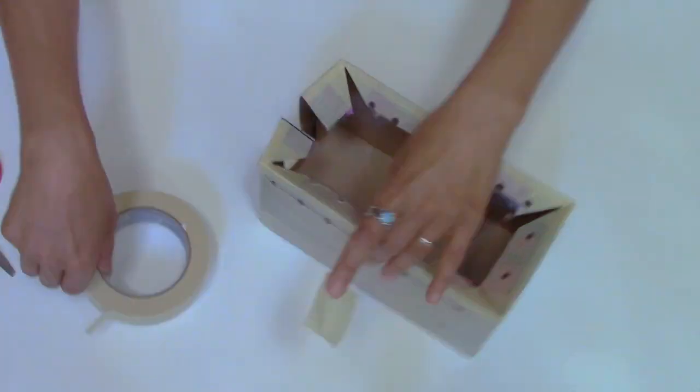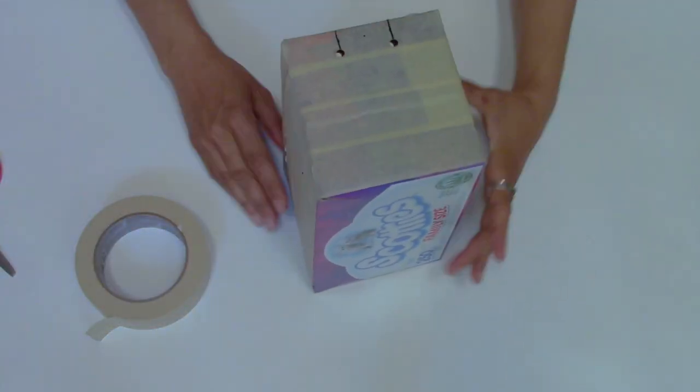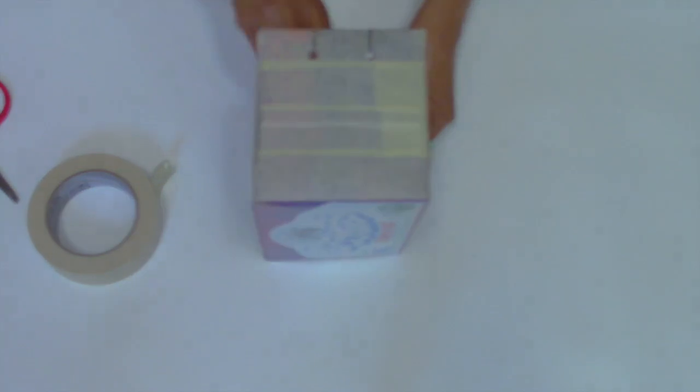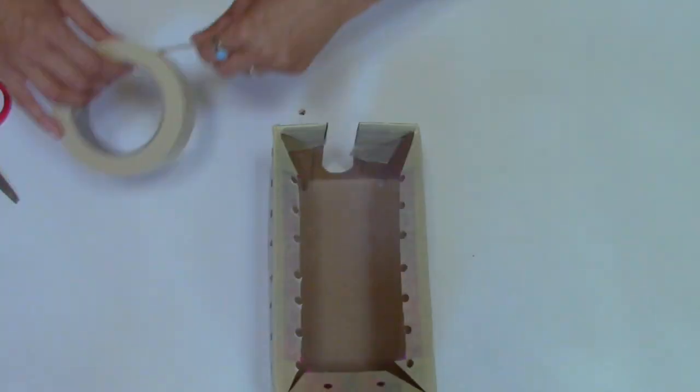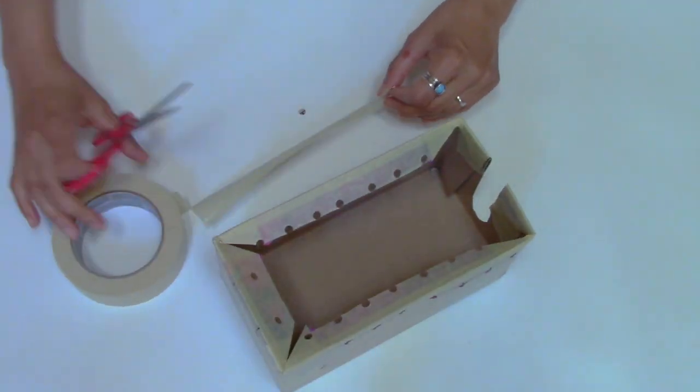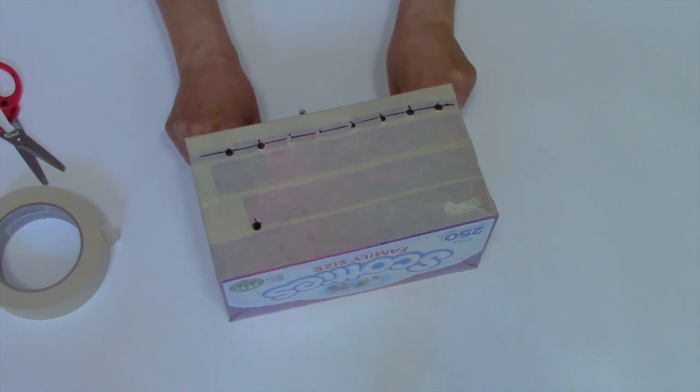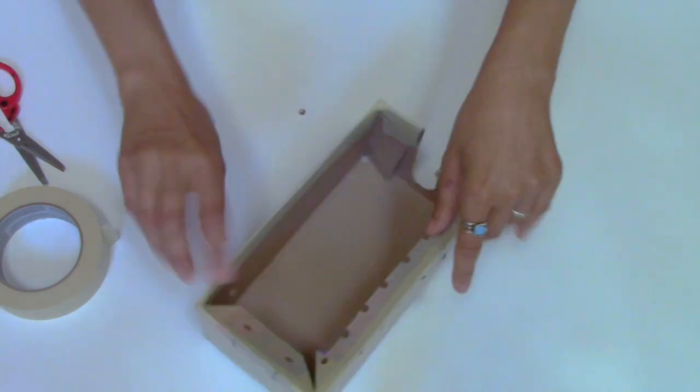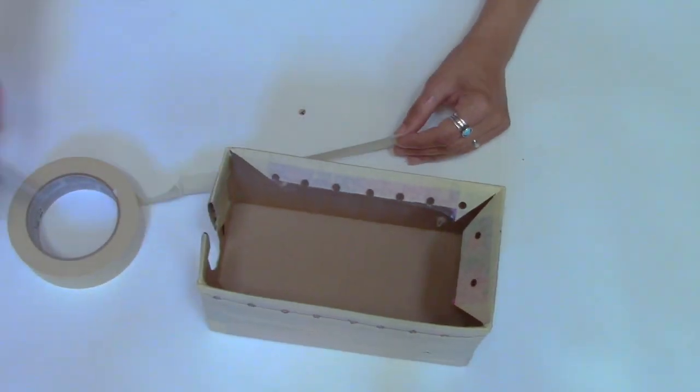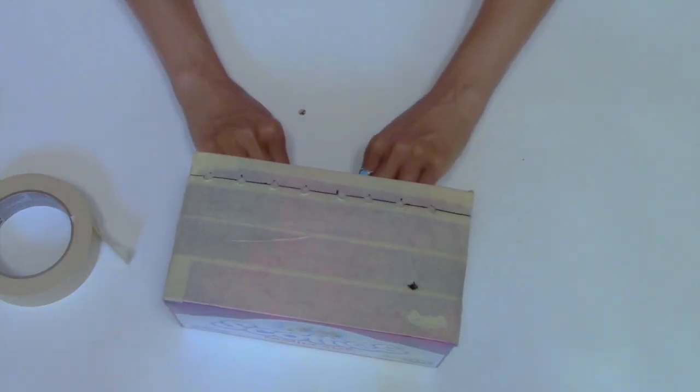Now I'm going to tape the edges down. I waited to do this after I punched the holes because it was hard enough to punch through two layers of cardboard and I didn't want to have an extra layer of tape to go through. A sharpened pencil will easily push through any tape that covers the holes.